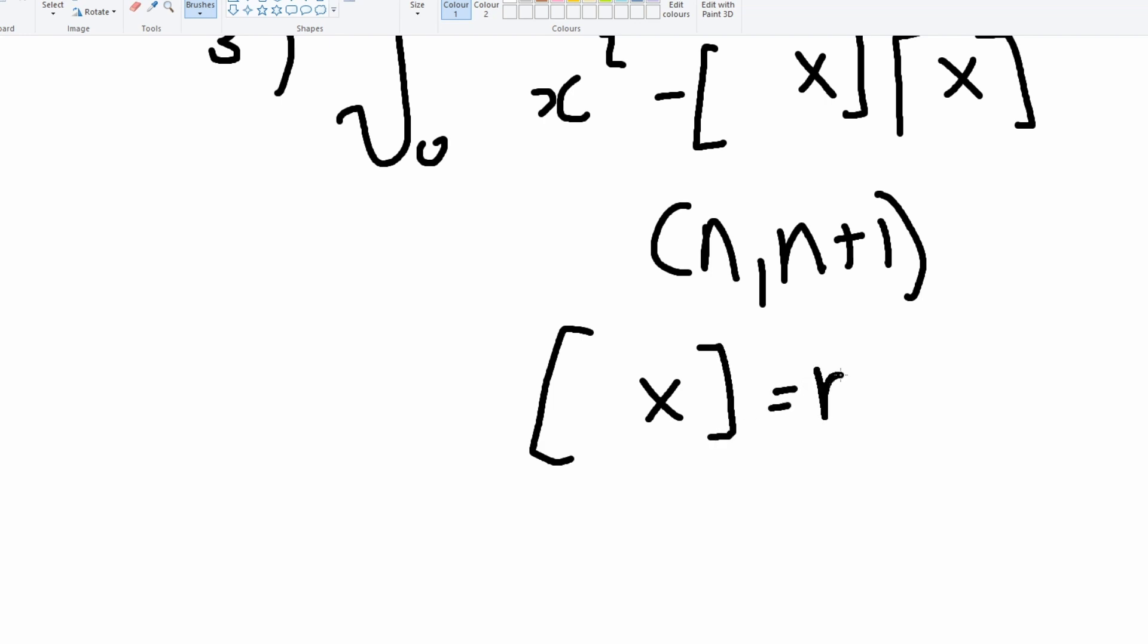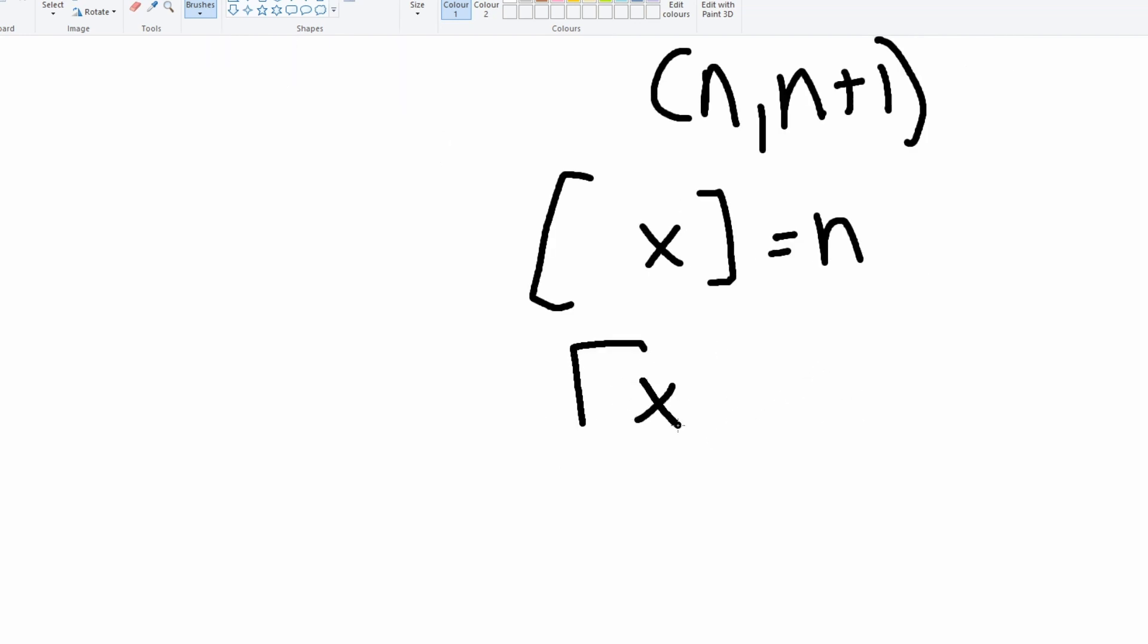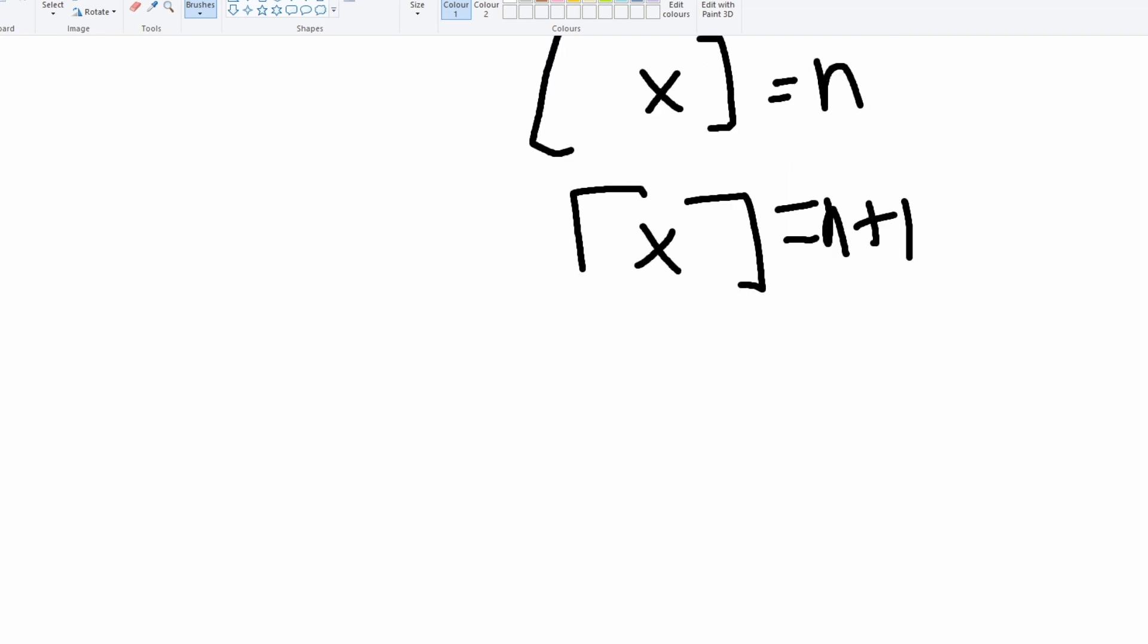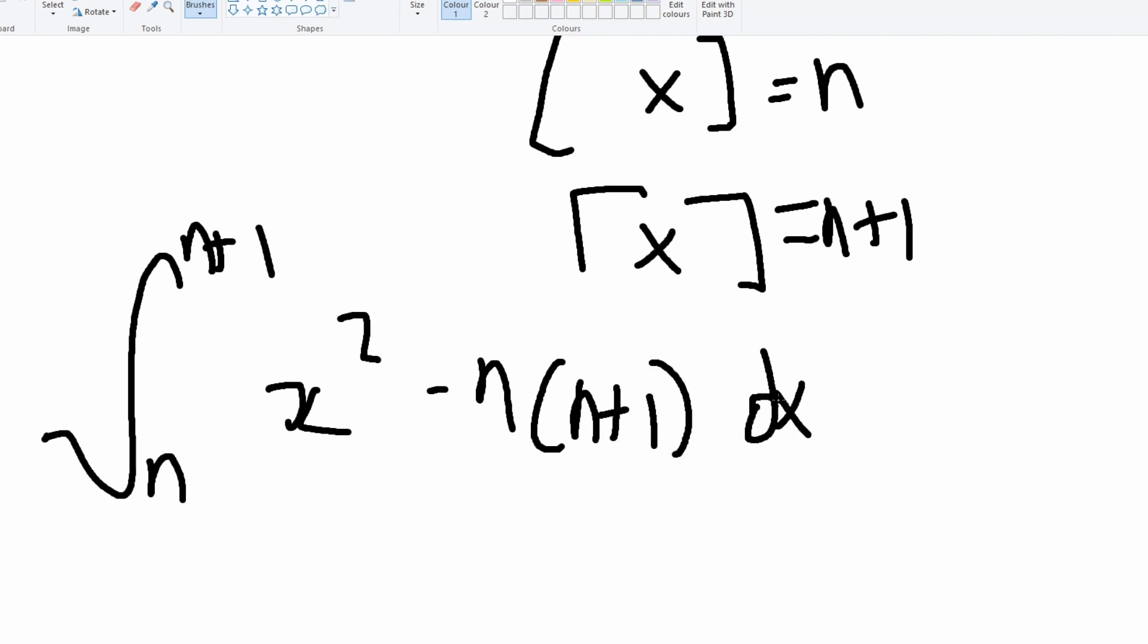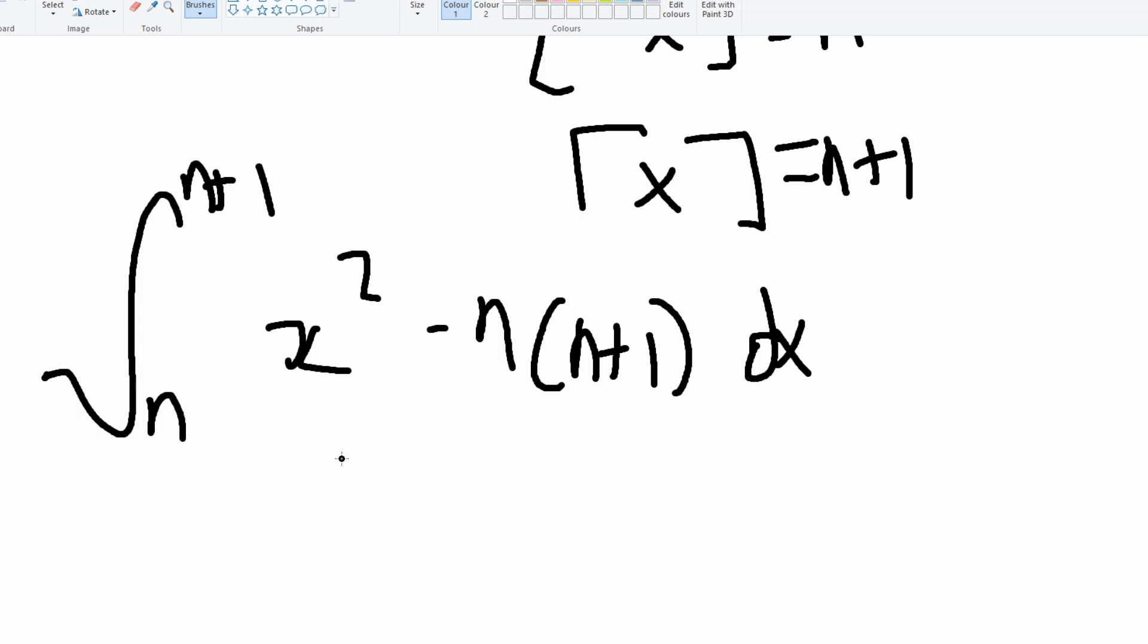Then we'll just evaluate this integral right here when we substitute it in: x squared minus n times n plus one dx. Now this becomes really simple, we can just use the reverse power rule.